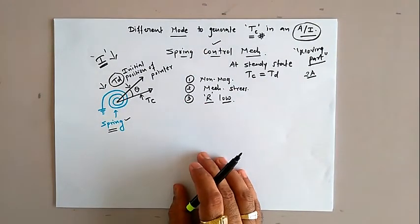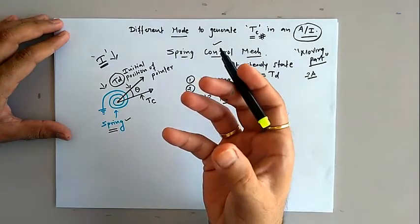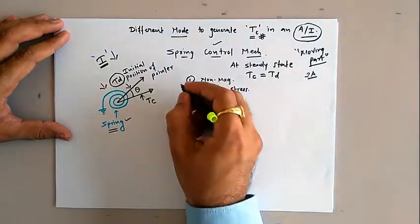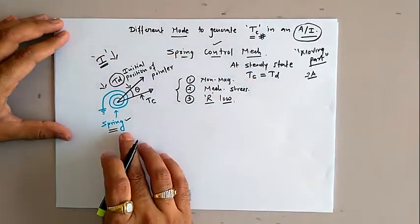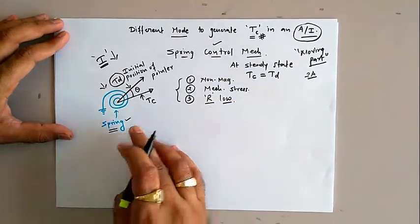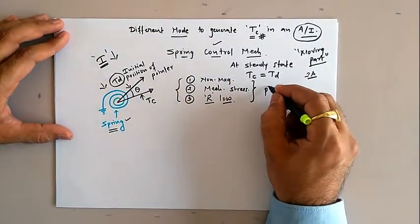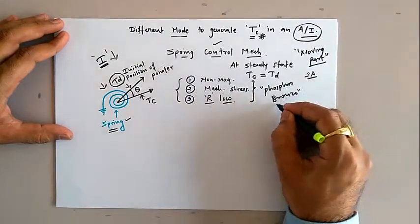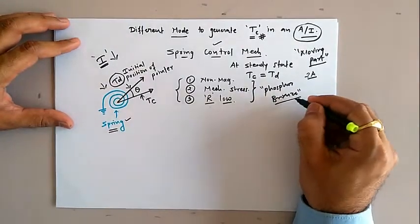To overcome that problem, we need to select materials that offer very low resistance to the flow of current. These three properties — non-magnetic nature, freedom from mechanical fatigue, and low resistance — are available in phosphor bronze material, and that is the reason the spring is made of phosphor bronze in most cases.